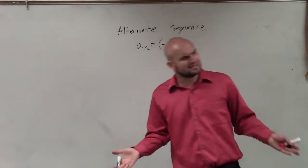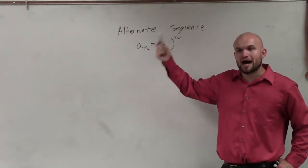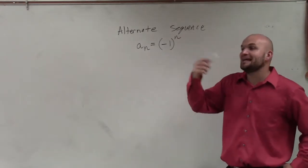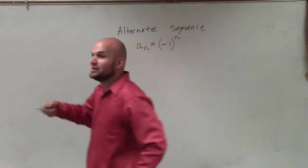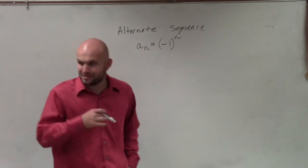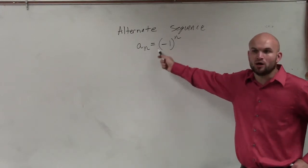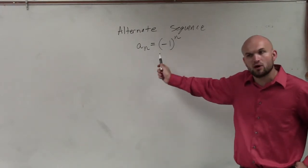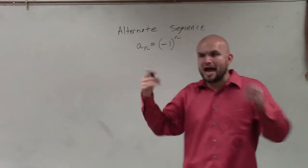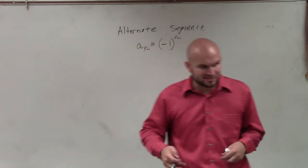Why does that work? Well, any negative number raised to an odd power is always going to be negative. Any negative number raised to an even power is always going to be positive. So all this does is alternate between negative 1, 1, negative 1, 1, negative 1, 1. It's not actually affecting the absolute value of your sequence terms — it's just alternating the signs.